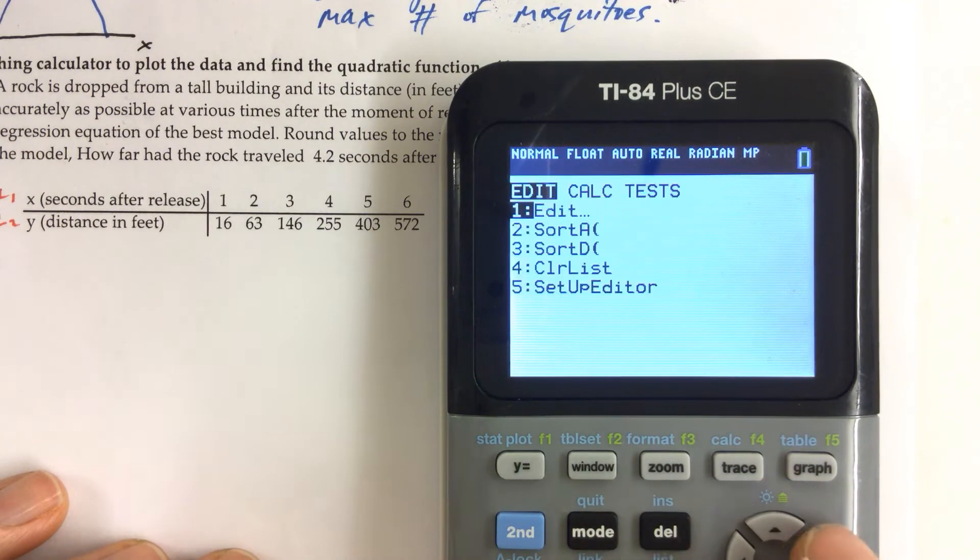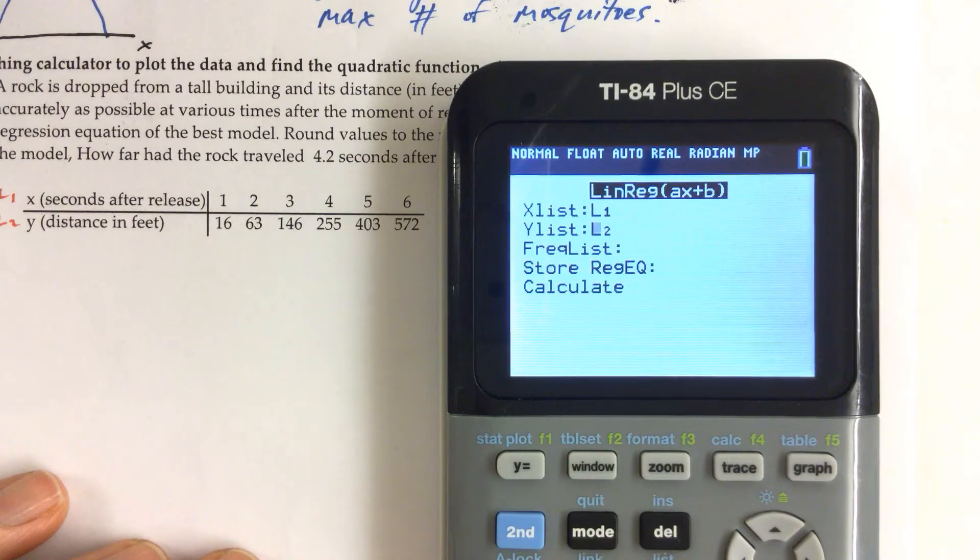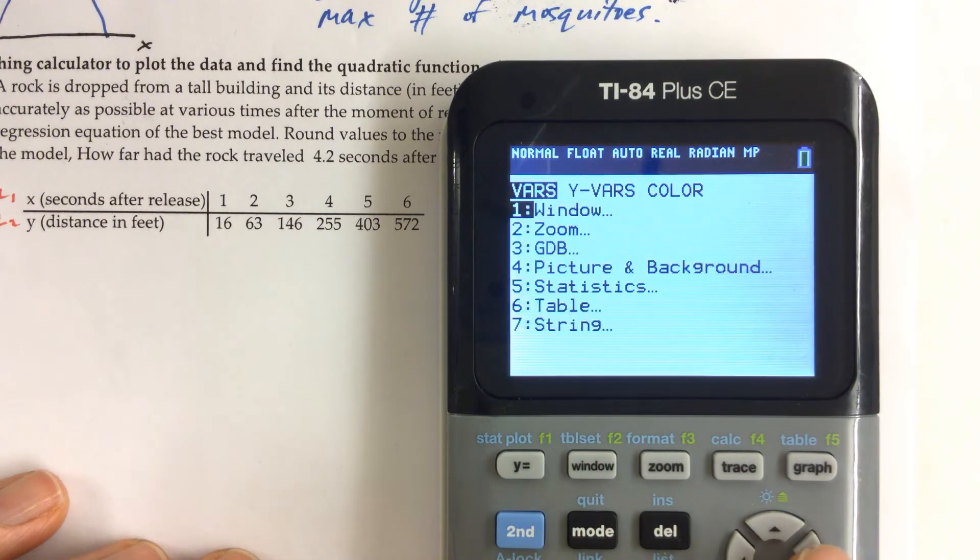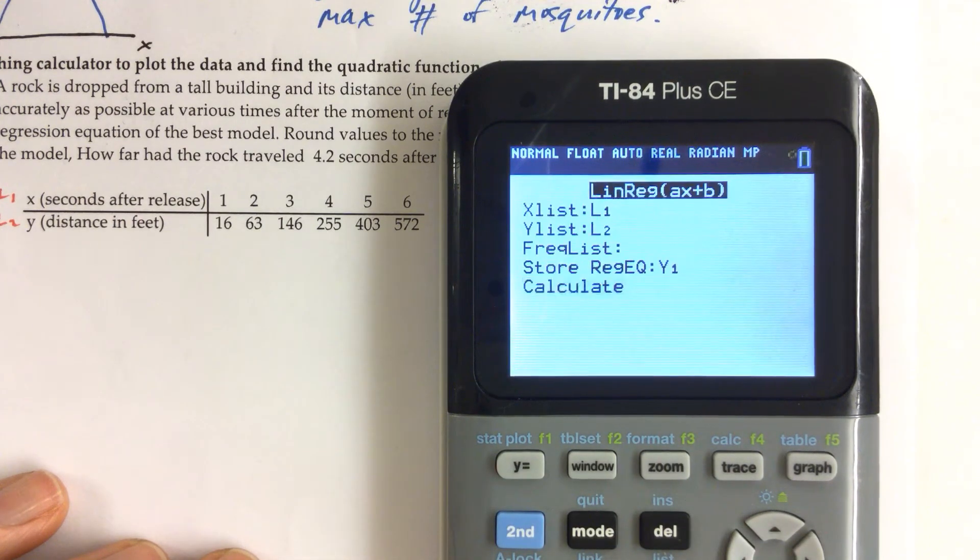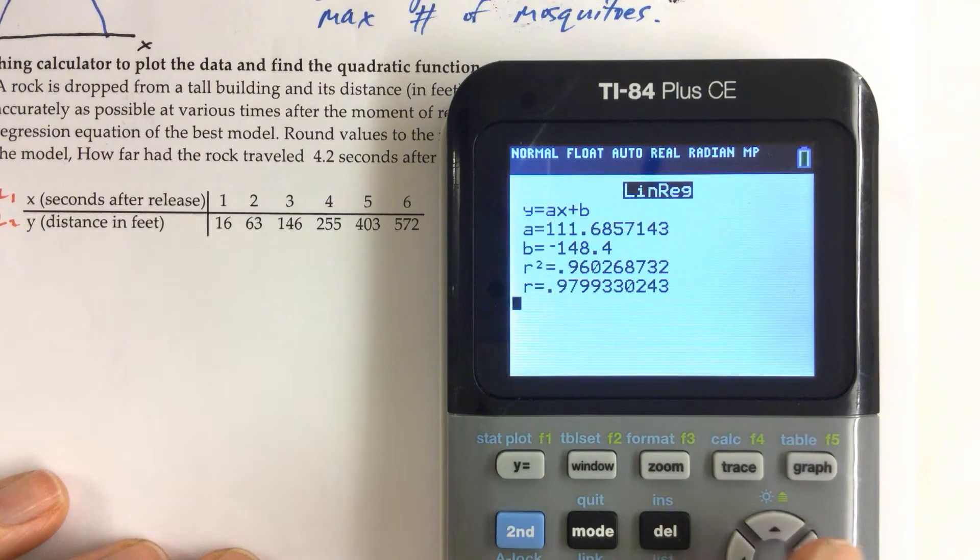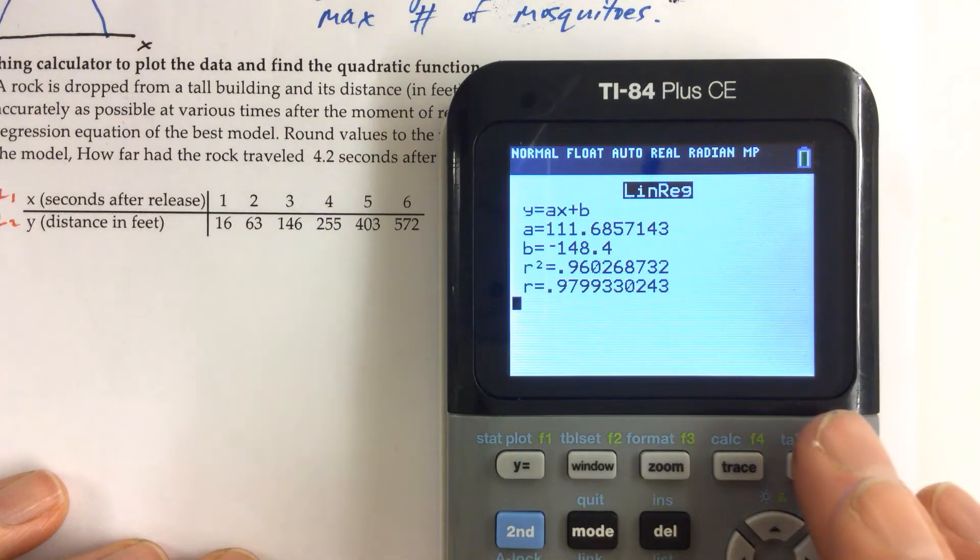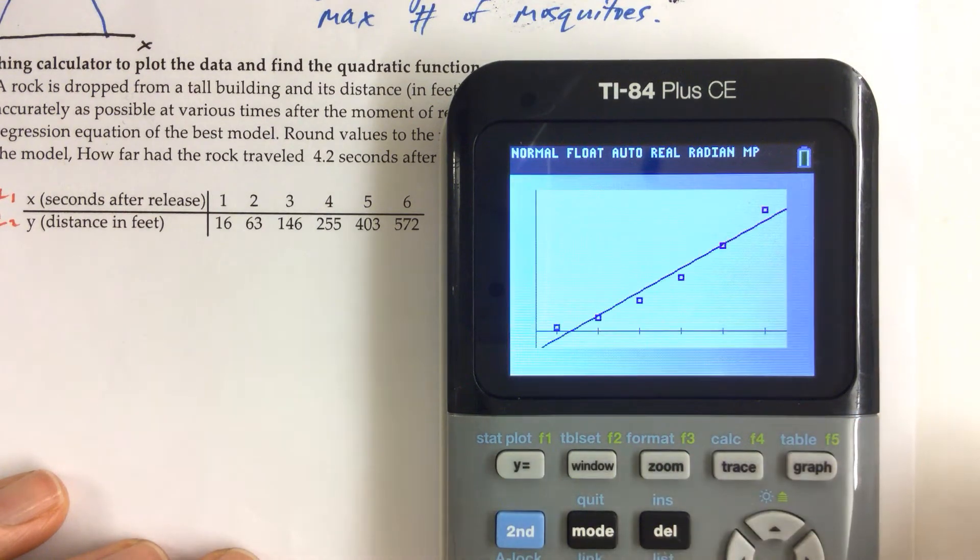I should have stored it in Y1. So I'm going to go ahead and store it in Y1, and if we graph it, we can see the line. Yeah, that does look okay for a line of best fit.